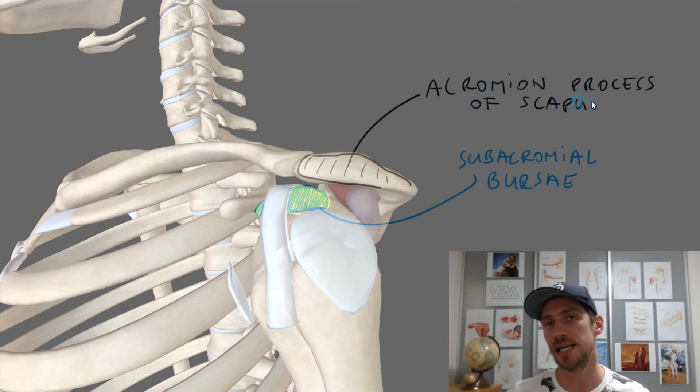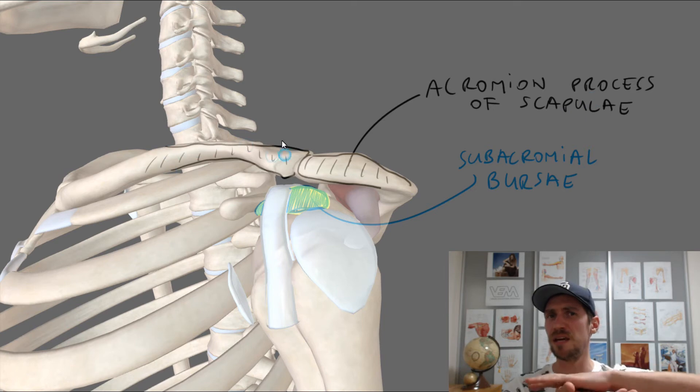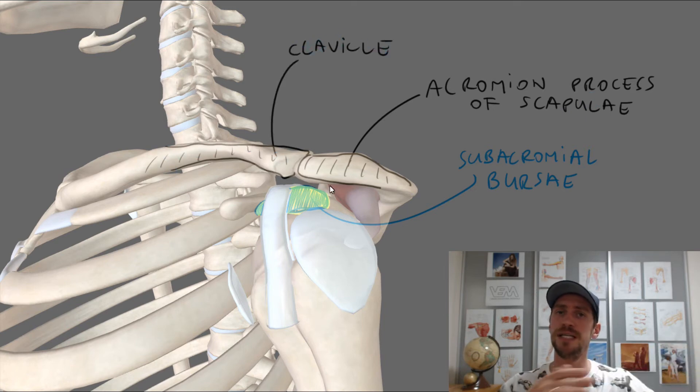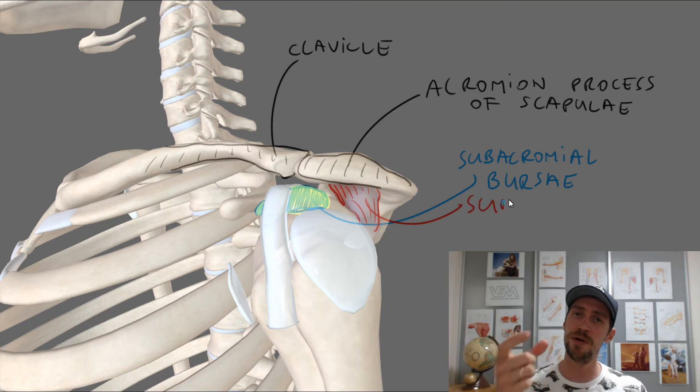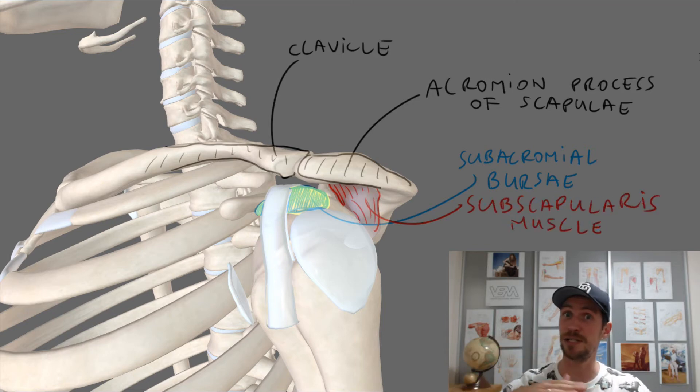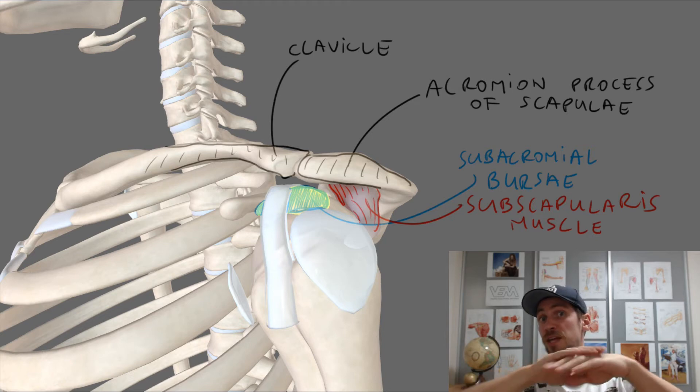Excessive strain and trauma can cause tendonitis of the supraspinatus tendon, and it can be associated with calcific tendonitis — a very nasty condition. All these conditions have a tendency to enter a chronic stage and stay there.